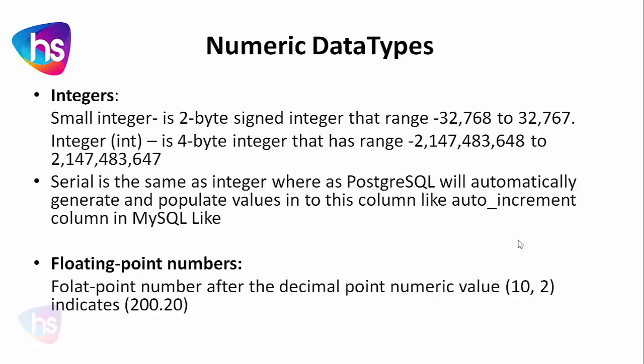Normal INTEGER — you can also call it a big integer — is a four-byte integer with a range of approximately negative 2,147,483,648 to positive 2,147,483,647. Within that range, the integer data type will handle the number.